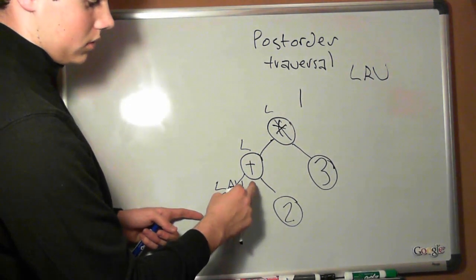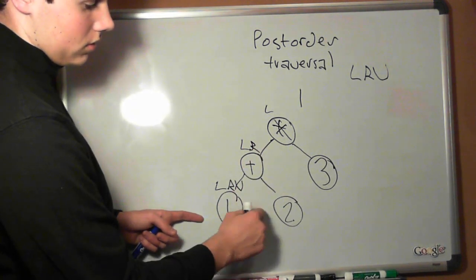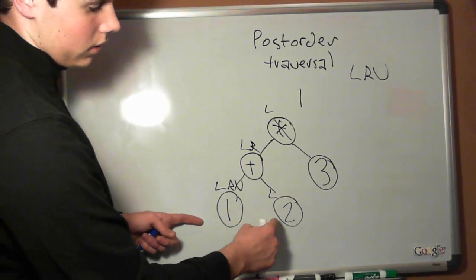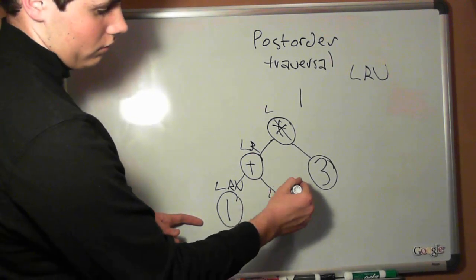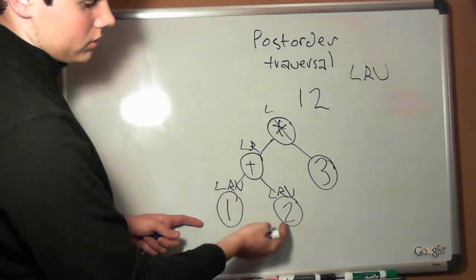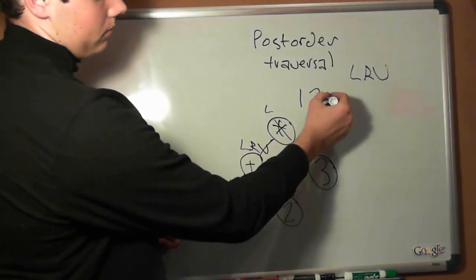We come up here to this plus sign, right. We come down here, we go down to the right. We cannot go left anymore, we cannot go right anymore. We record the value, 2. We recursively call back up here to this plus sign. We record the value, plus.